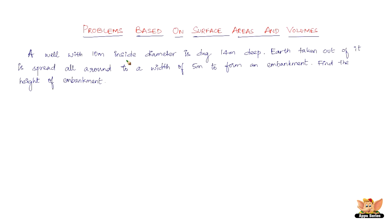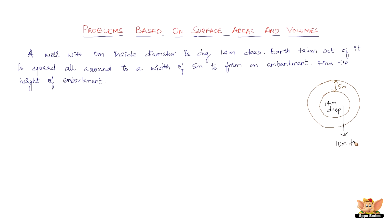Let's see the visual part of this problem. Here we have the outer part of the well and the inner part - they dig the earth out of this part and spread it evenly around the well. This width is 5 meters. We need to find the height of this embankment, given that the depth is 14 meters and the inside diameter is 10 meters. The green shaded region is the earth spread out evenly.